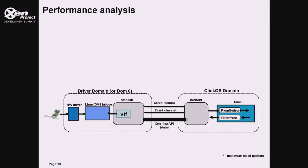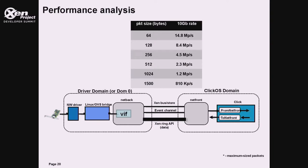The Linux bridge or OpenVSwitch in more recent Xen versions is attached to the switch, along with a virtual interface called VIF, managed by the Netback driver. The Netback driver connects to a network frontend over the Xen ring. Event channels are used for notifications, and the Xen bus for control. Our goal is to achieve 10 gigabit line rate for all packet sizes — meaning 813,000 packets per second for maximum size packets, and up to 14.88 million packets per second for minimum size packets.